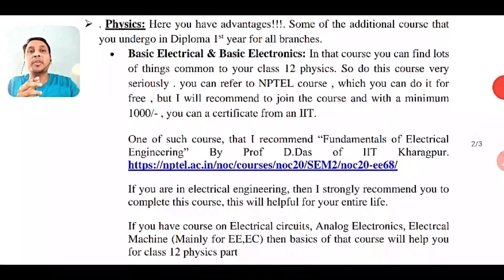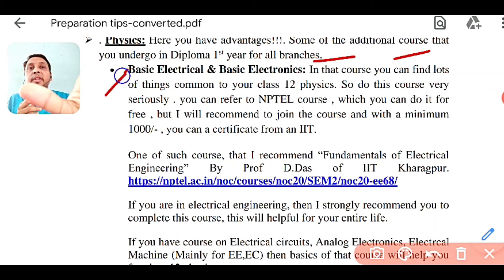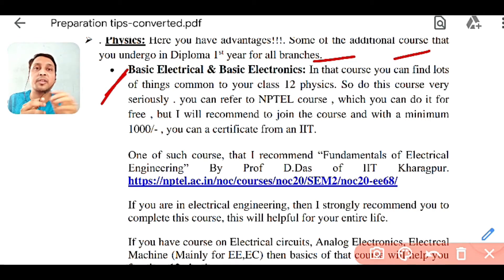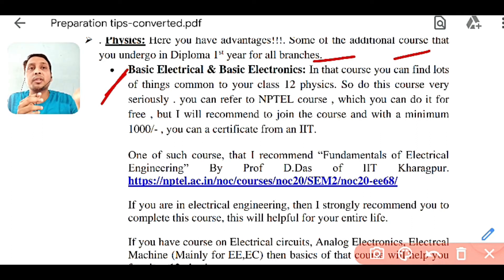Now coming to physics — you have a lot of advantages here. Some additional courses you have done in diploma are very helpful. Basic Electrical and Basic Electronics are common courses in your first year, and they are very important. They will help you with class 12 physics, which is basically electricity, electrostatics, basic electronics, semiconductor physics, PN junction, and basic electronics.